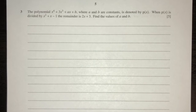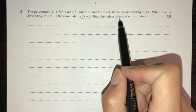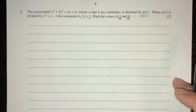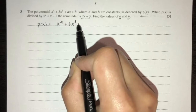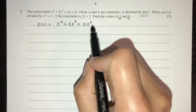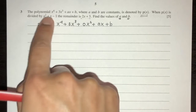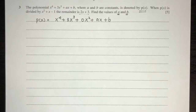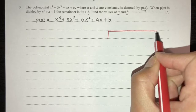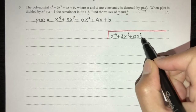Question number three: the polynomial p(x) = x^4 + 3x^3 + 0x^2 + ax + b. When p(x) is divided by a given expression, the remainder is given. We need to find a and b. We write p(x) carefully including the 0x^2 term, then perform long division since we already know the remainder.